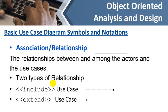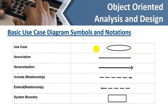The next element is the association or relationship. We always link the actor with the use cases using a simple line — this connects them to represent which user is connected to which use case and what functionality they will perform. Along with this simple line, there are two more kinds of associations: one is known as 'include' and the other is known as 'exclude'. We will study these later. For now, remember the simple line that connects actors with use cases.